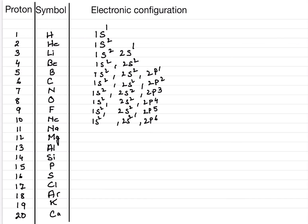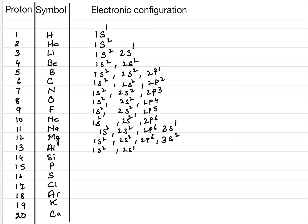Next comes sodium — let's do it once more. Sodium is 1S2 2S2 2P6, which is 10 electrons, and then 3S1, giving 11 electrons total. Moving on to magnesium: 1S2 2S2 2P6 3S2. Then aluminium is 1S2 2S2 2P6 3S2 followed by the 3P subshell.